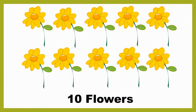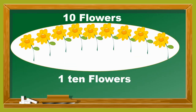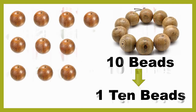Now look at the beautiful flowers. Let's count them — 1, 2, 3, 4, 5, 6, 7, 8, 9, 10. There are 10 flowers. When we group 10 flowers together, we get one group of 10. Now look at these roses — there are 10 roses. When we group 10 roses together, we get one group of 10. Now look at these beads — there are 10 beads. When we group 10 beads together, we get one group of 10.